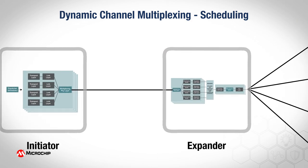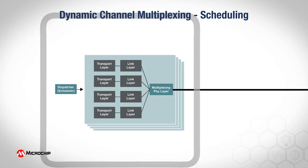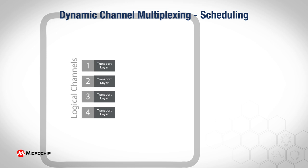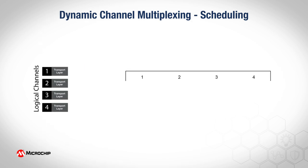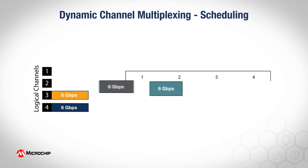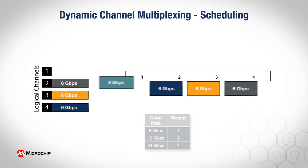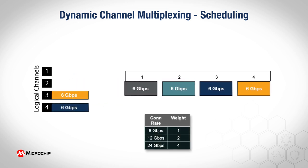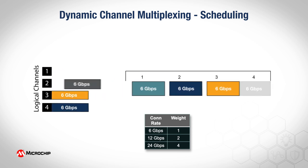SPL packets from each logical channel are interleaved onto the physical channel using a weighted round robin scheme. The channel weights are determined by the connection rate of each logical channel. In this example, each DCM logical channel is carrying a 6 gigabit per second connection, so the channel weight for each channel is 1. This means that one data packet is transmitted from each channel before the pattern repeats.